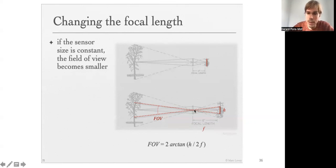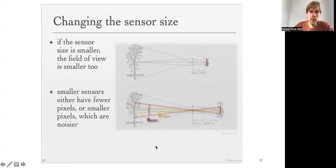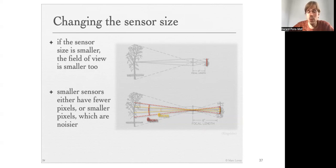The field of view is given by 2·arctan(H/2 / f), where H is the sensor height. If the sensor size is smaller, the field of view is smaller too. Smaller sensors either have fewer pixels or smaller pixels, which become noisier because they gather less light.